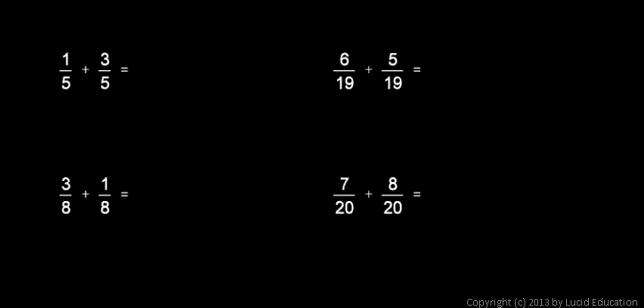Adding like fractions is pretty easy. You simply add the numerators and put the result over the common denominator.